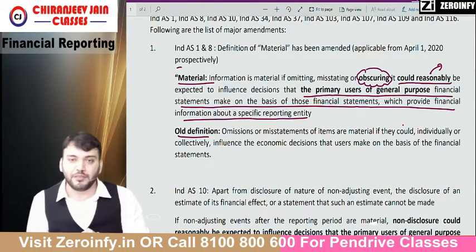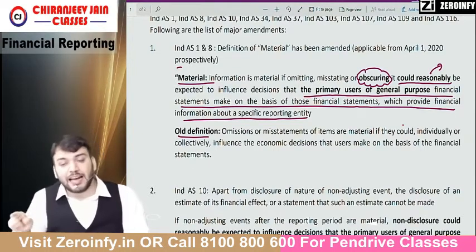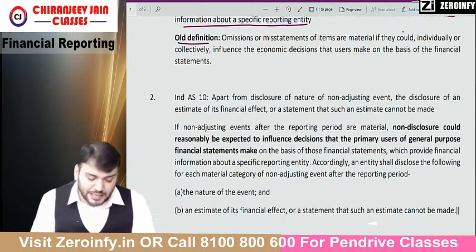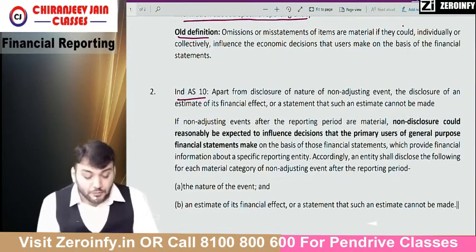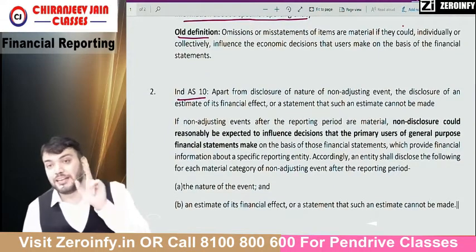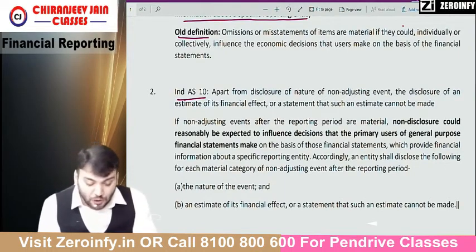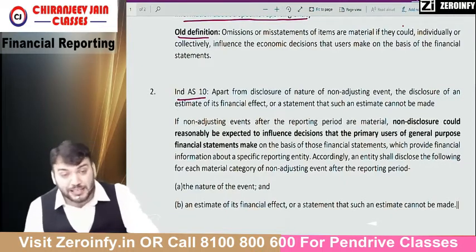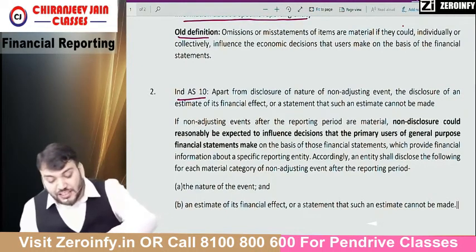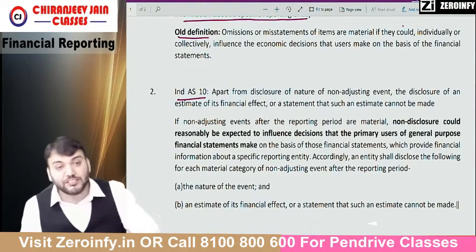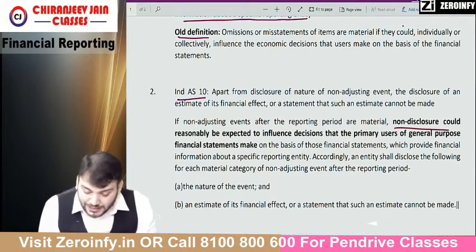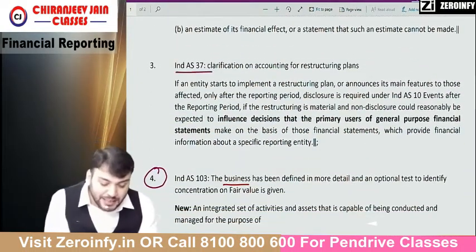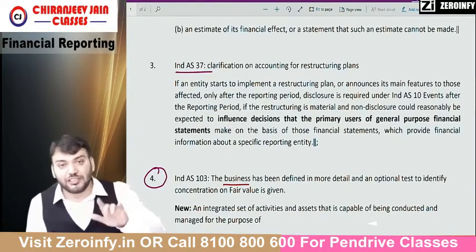This same thing has been added in the definition of material given under Ind AS 8. Under Ind AS 10, for a non-adjusting event we disclose if the item is material. What they have now said is: if a non-adjusting event after the reporting period is material, non-disclosure could reasonably be expected to influence the decision that the primary user of general purpose financial statements makes. This word has been added due to the changes in the definition of materiality.